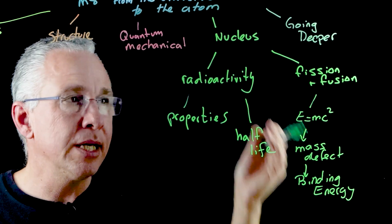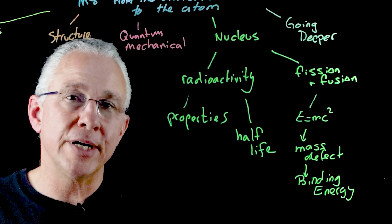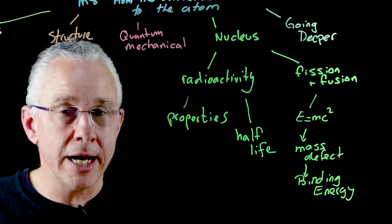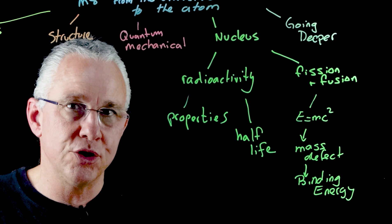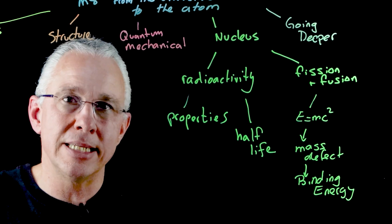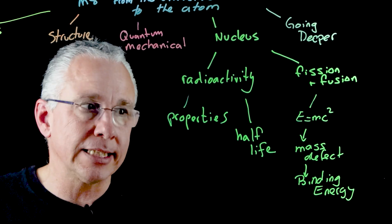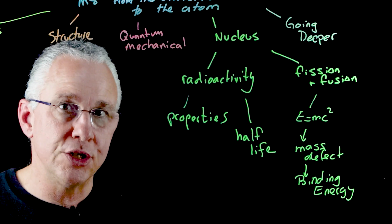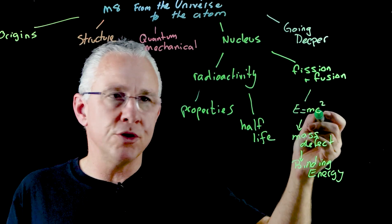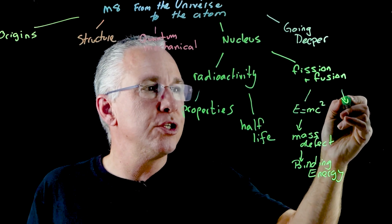The same is true for fusion. So for any element that is smaller than iron, then if you combine these elements, you're going to generate energy because the mass of the products ends up being less than the mass of the reactants. We have a mass defect and that results in a change in the binding energy. But in terms of fission and fusion, one aspect is also the utilization.